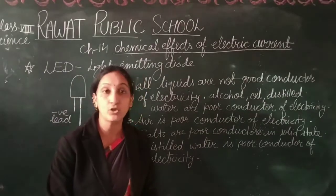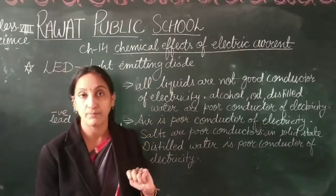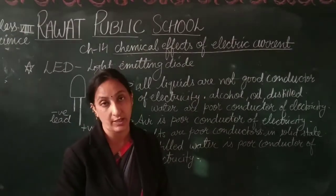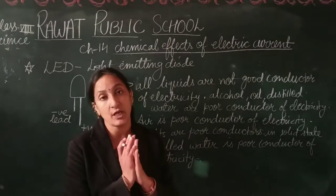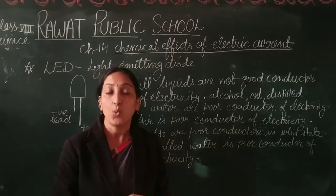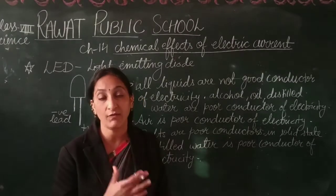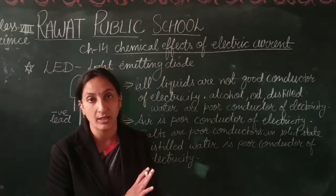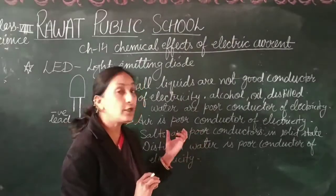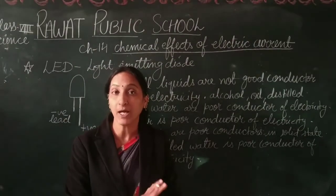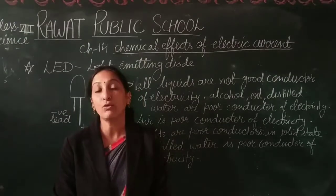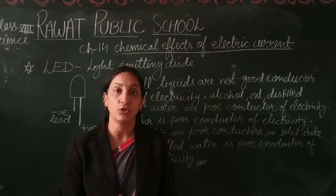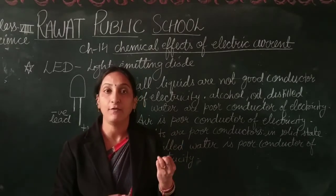Salts are poor conductors in their solid state. For example, sodium iodide or sodium chloride — common salt — are poor conductors in solid form. But when they are in molten form or when we dissolve them in water to make an aqueous solution, the ions become free to conduct electricity.